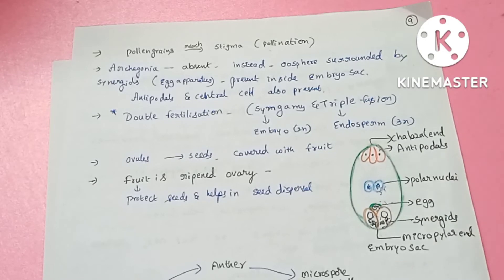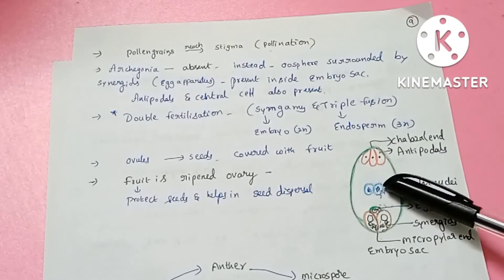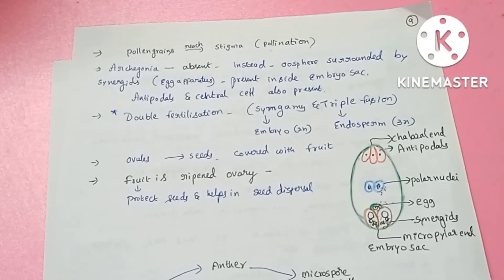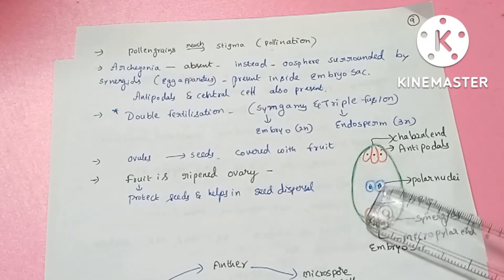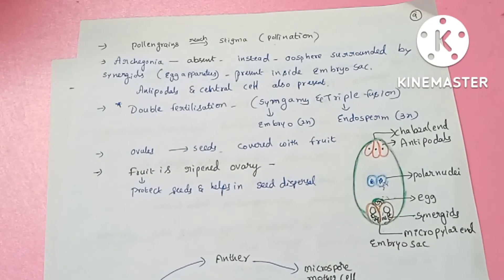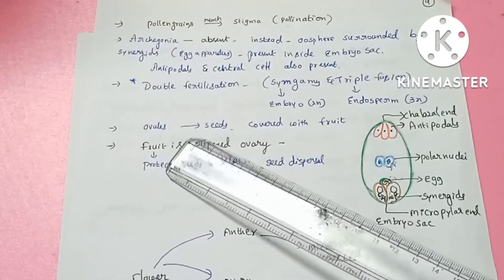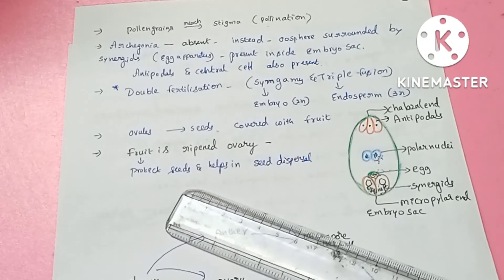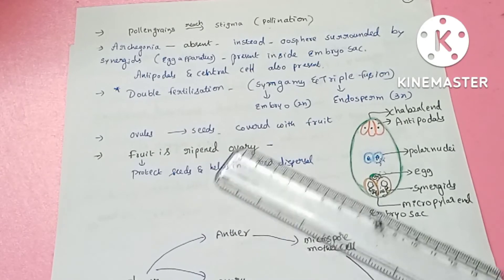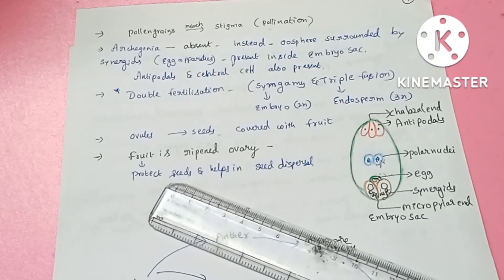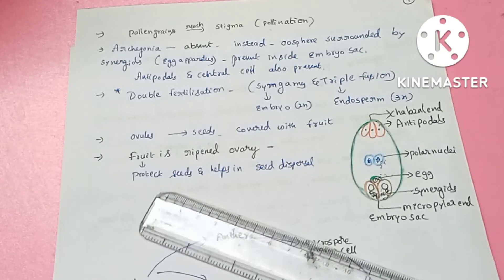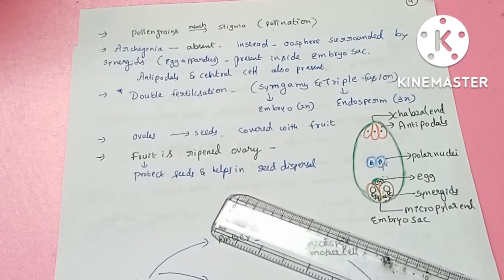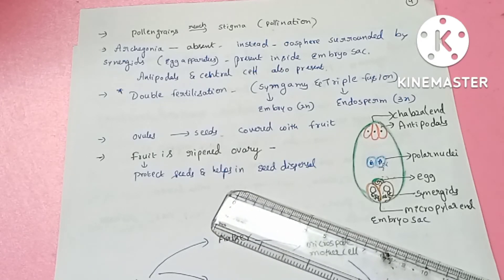This double fertilization is unique to angiosperms. After fertilization, ovules are converted into seeds and the ovaries ripen into fruit. The fruit covers and protects the seeds, which are then dispersed.